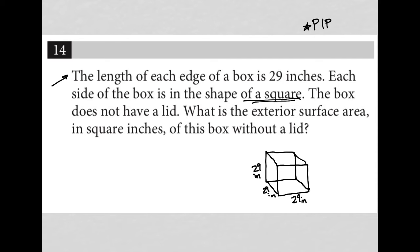In essence, because every side of this box is a square, I'm looking for the area of the square, which would be 29 times 29. Then I want to multiply that by the number of squares that make up this box—the number of sides I have on this box. That would be five.